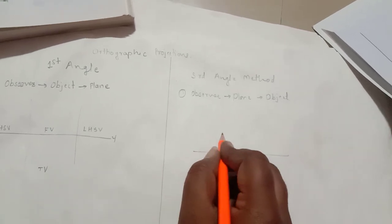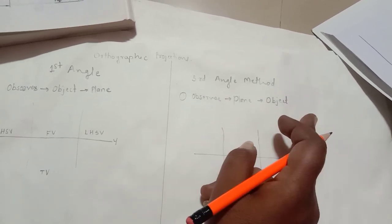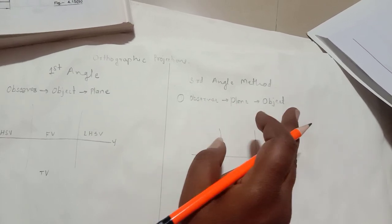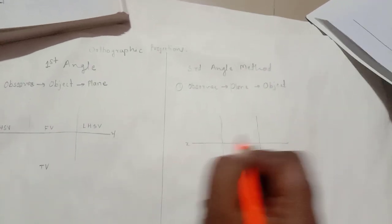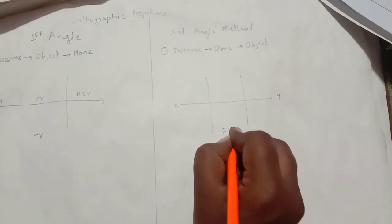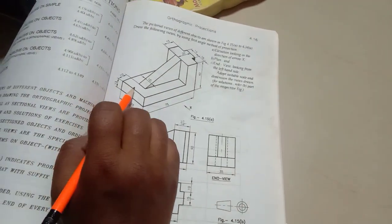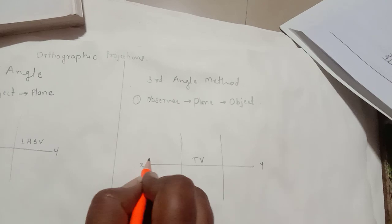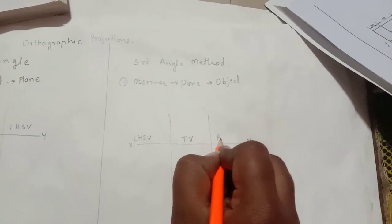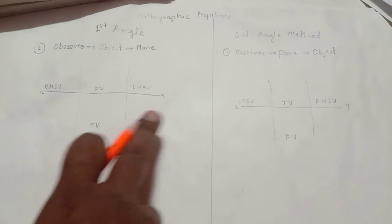In the case of the third angle method of projection, the sequence is observer, plane, then object. The object's projections go onto the plane nearer to the observer. Below the XY line, the front view comes, and above it, the top view comes. For the LHS view, the plane opens at the left side so the LHS view appears on the left side, and the RHS view appears on the right side. This is the major difference between first and third angle methods.